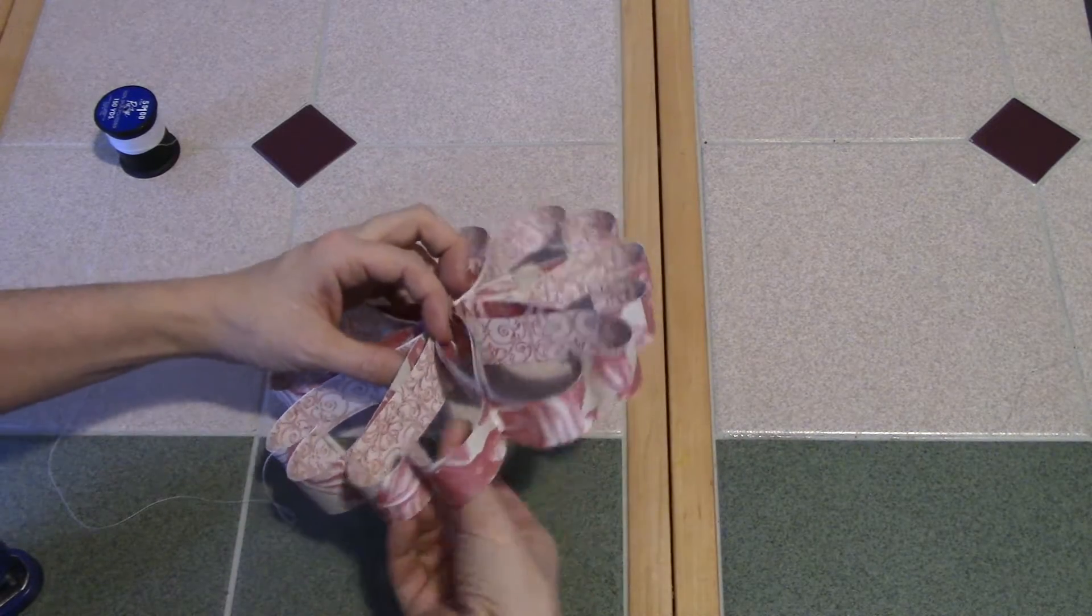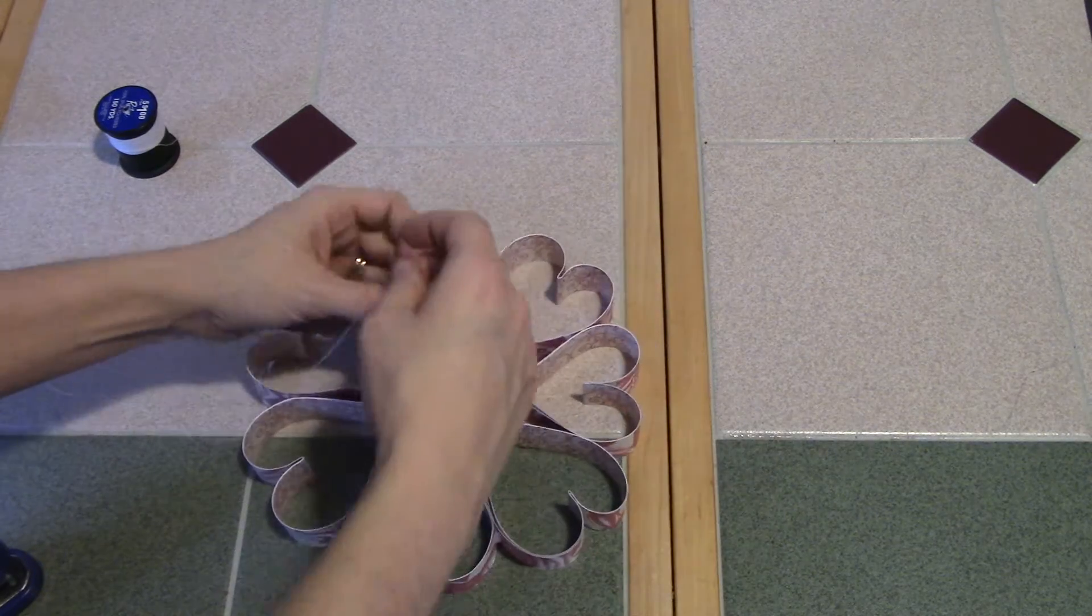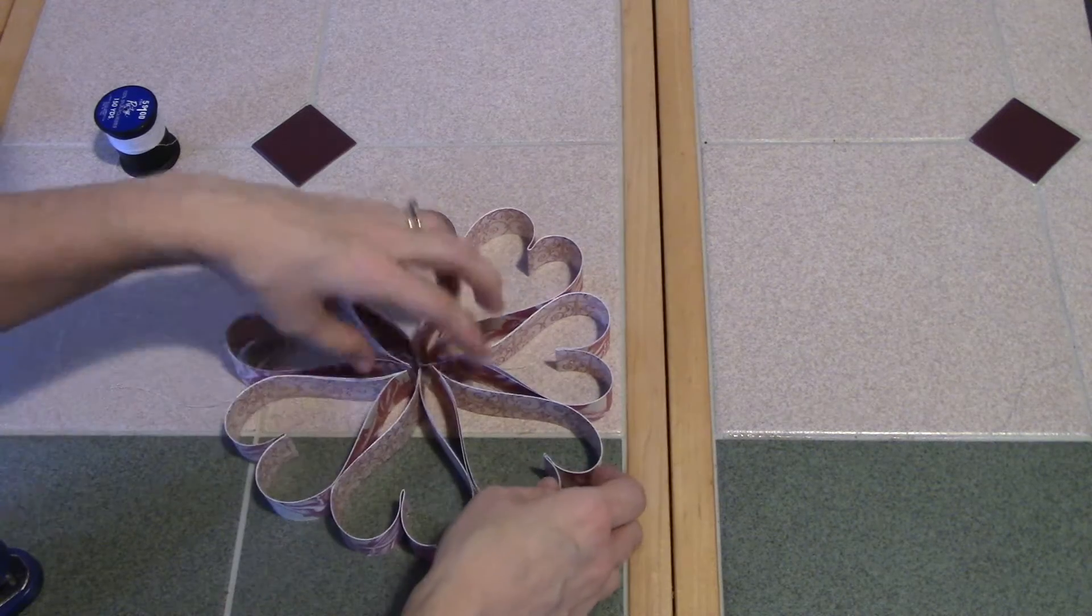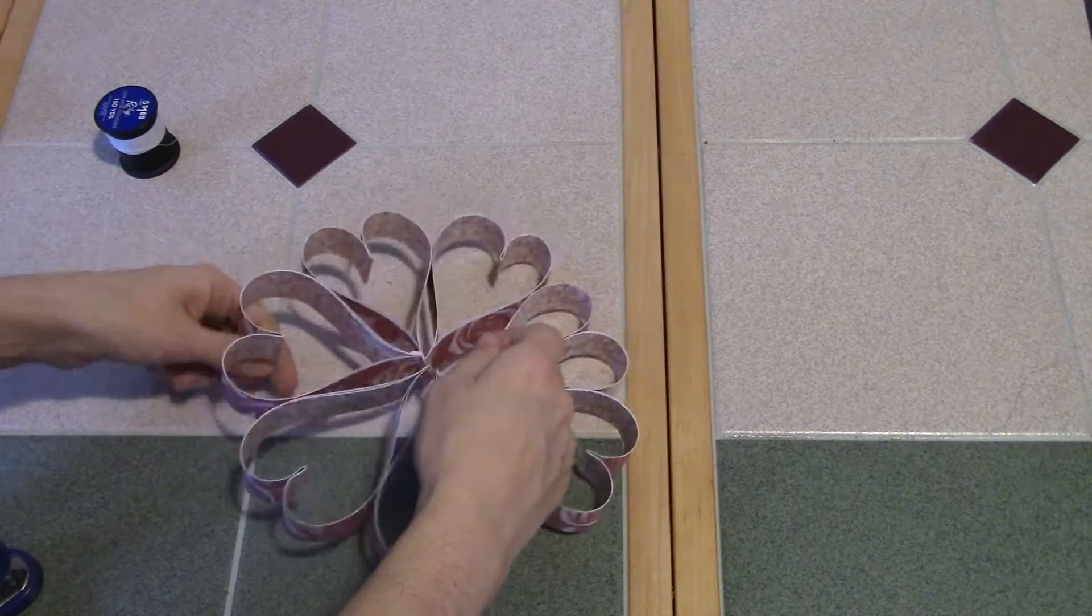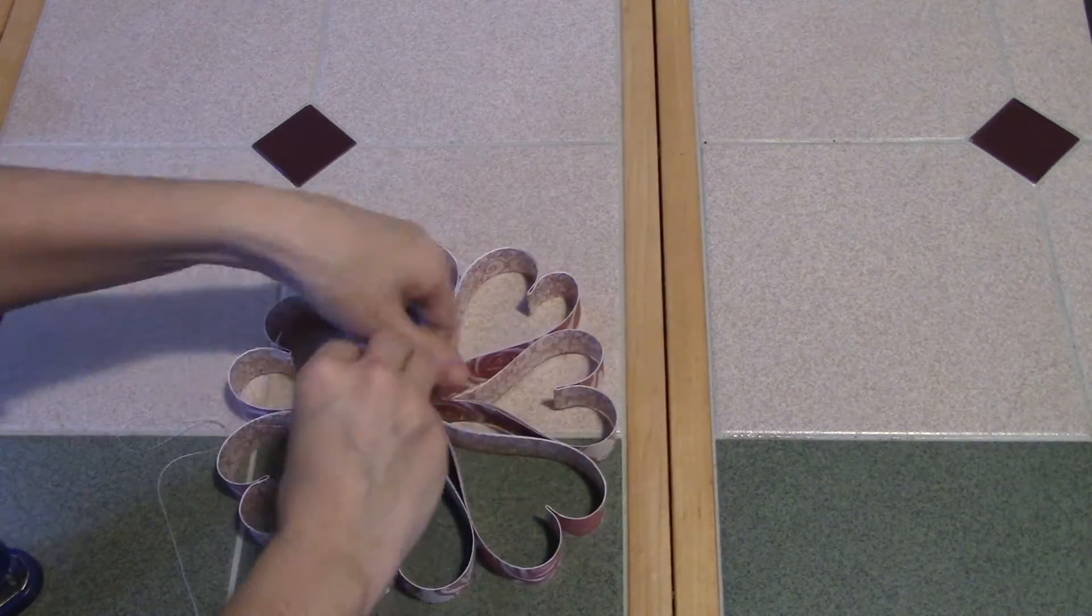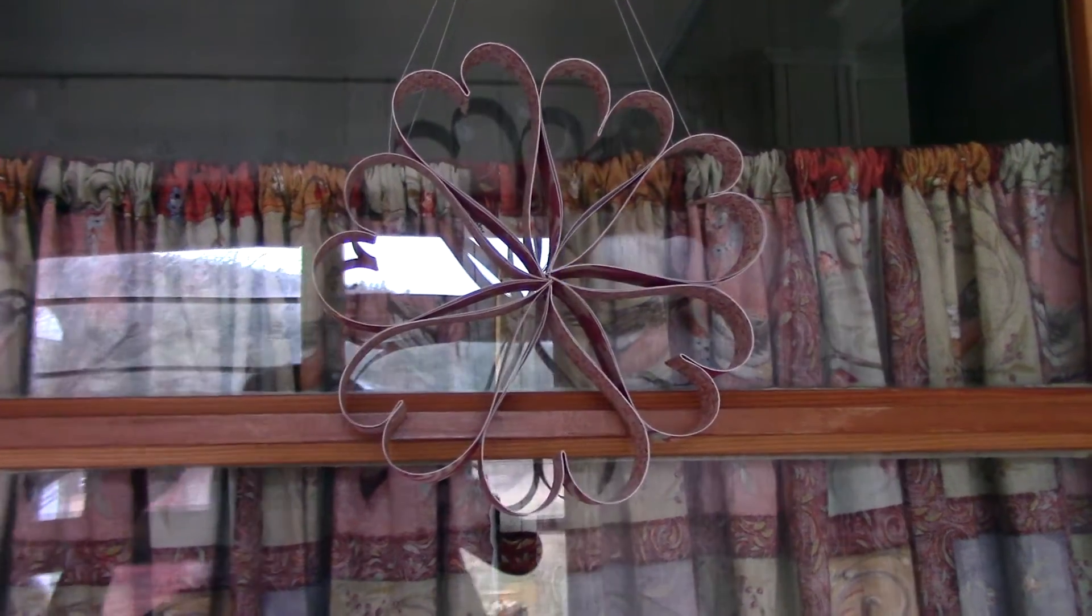The glue did hold the hearts together, but it felt a little bit flimsy to me, and I was worried about it coming apart. So I got some thread and went through the bottoms of the hearts and tied it together. It's a white, thin thread, and it goes down into the paper. You can't really see it, but it really tightened up the center of the wreath.